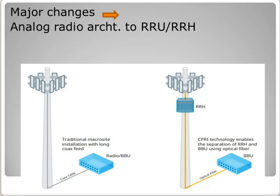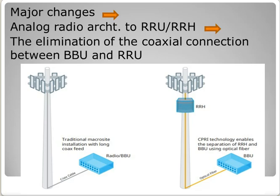So what are the major changes? The first is moving from analog radio architecture to RRU or RRH — remote radio unit or remote radio head. And finally, we have the elimination of the coaxial connection between the baseband unit, BBU, and RRU, which was a common source of signal degradation due to insertion loss, reflection, and the like.